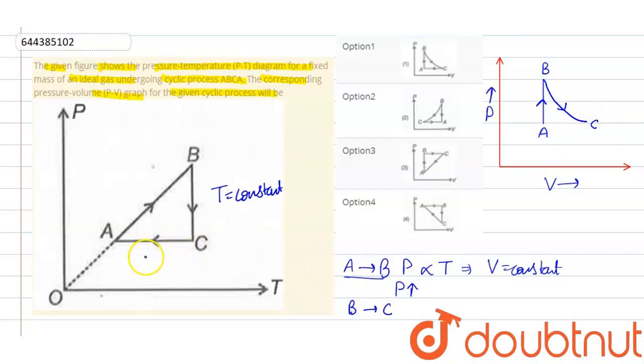Now from C to A, if we see C to A, the pressure is constant and temperature decreases, so volume also decreases. That means the graph goes in this way.